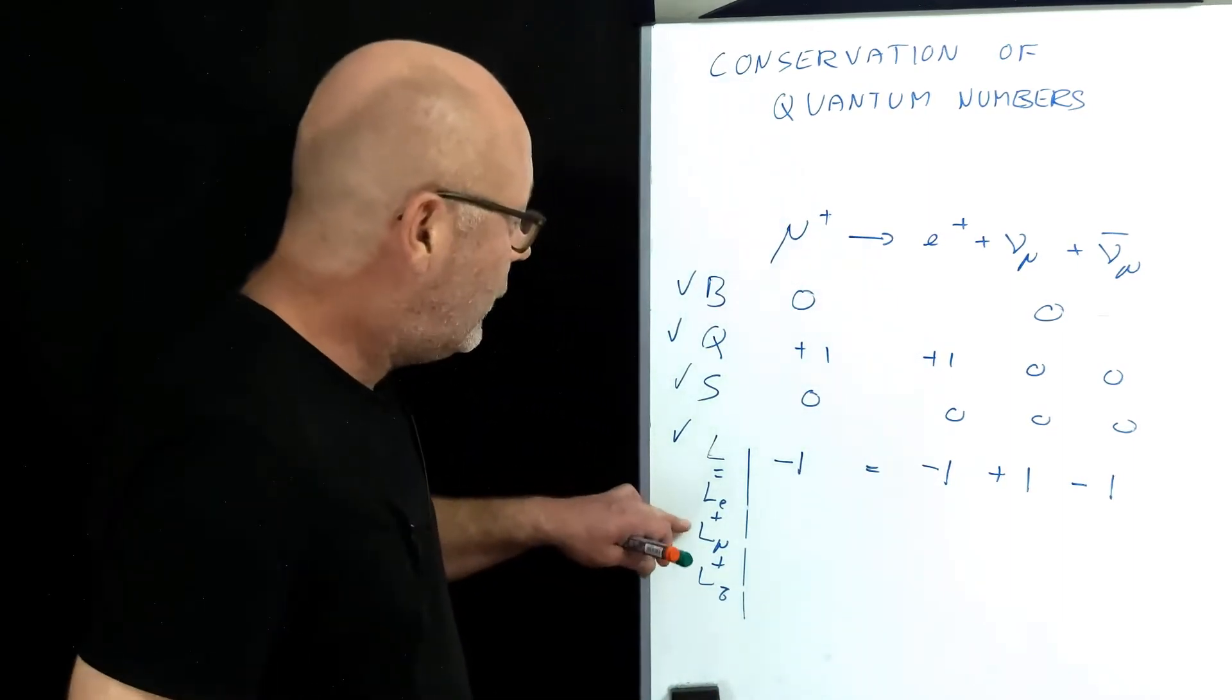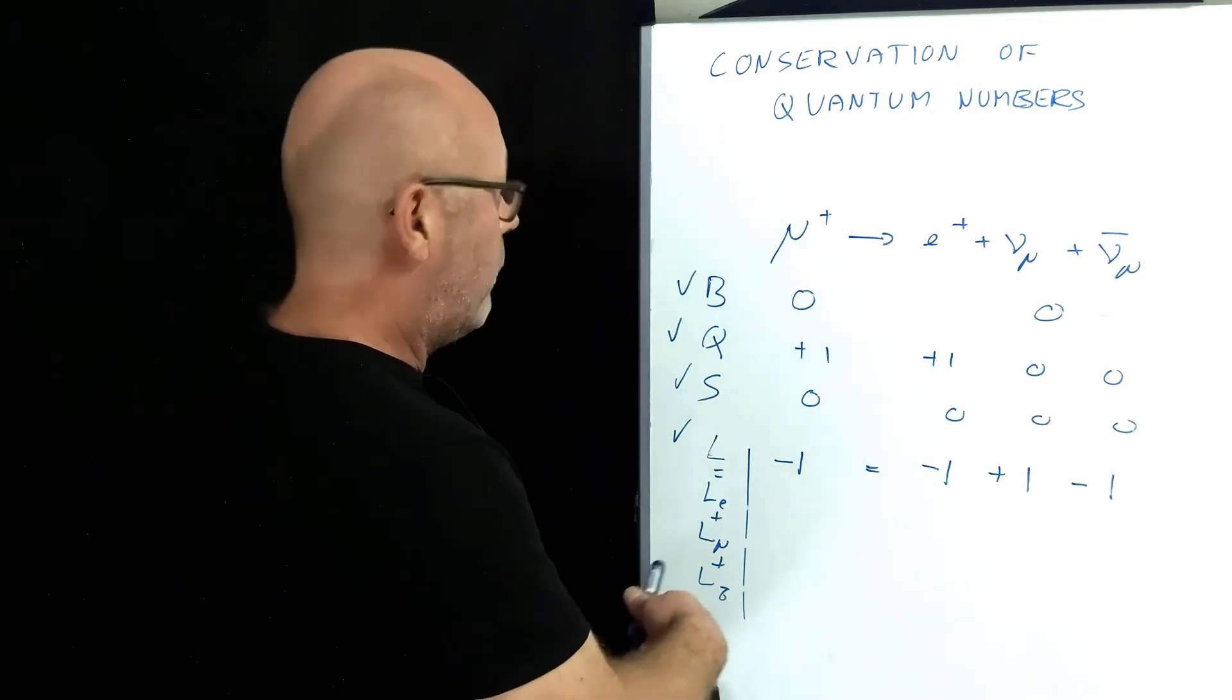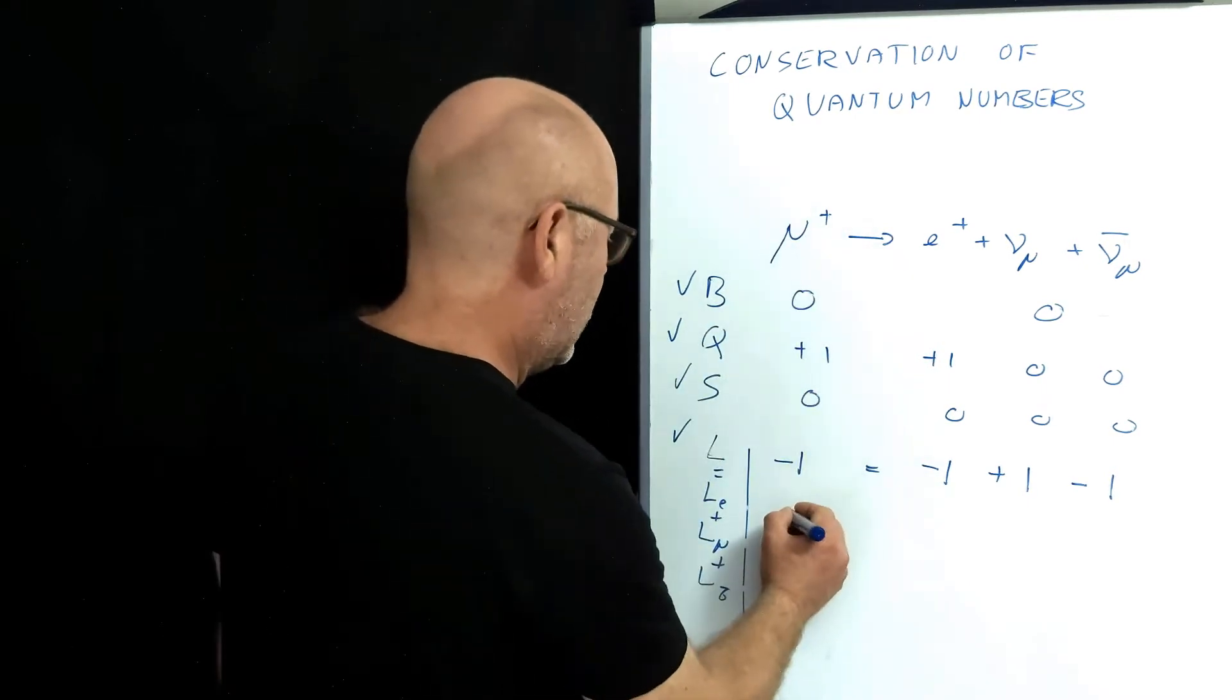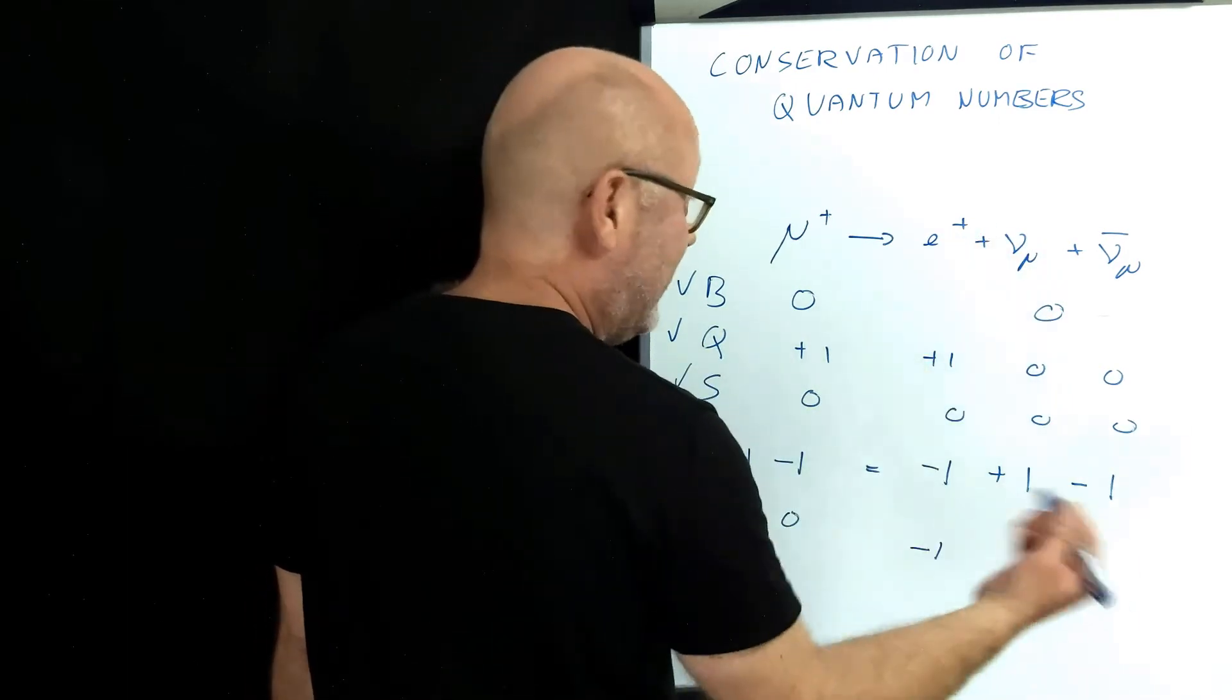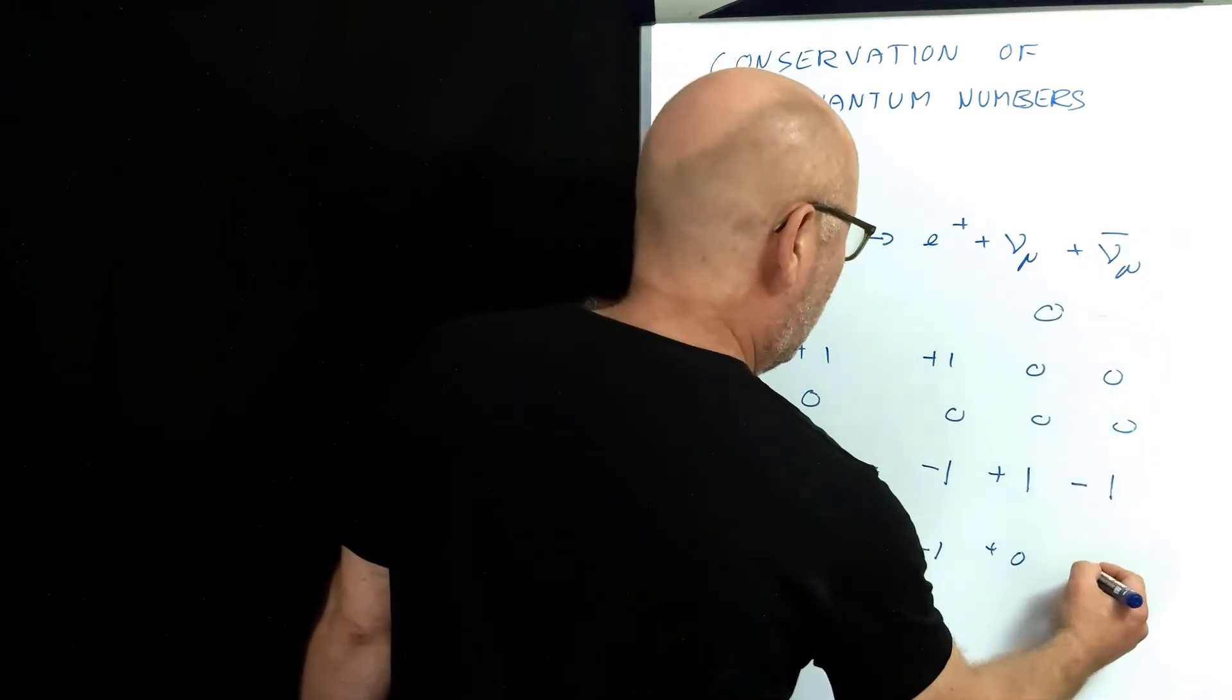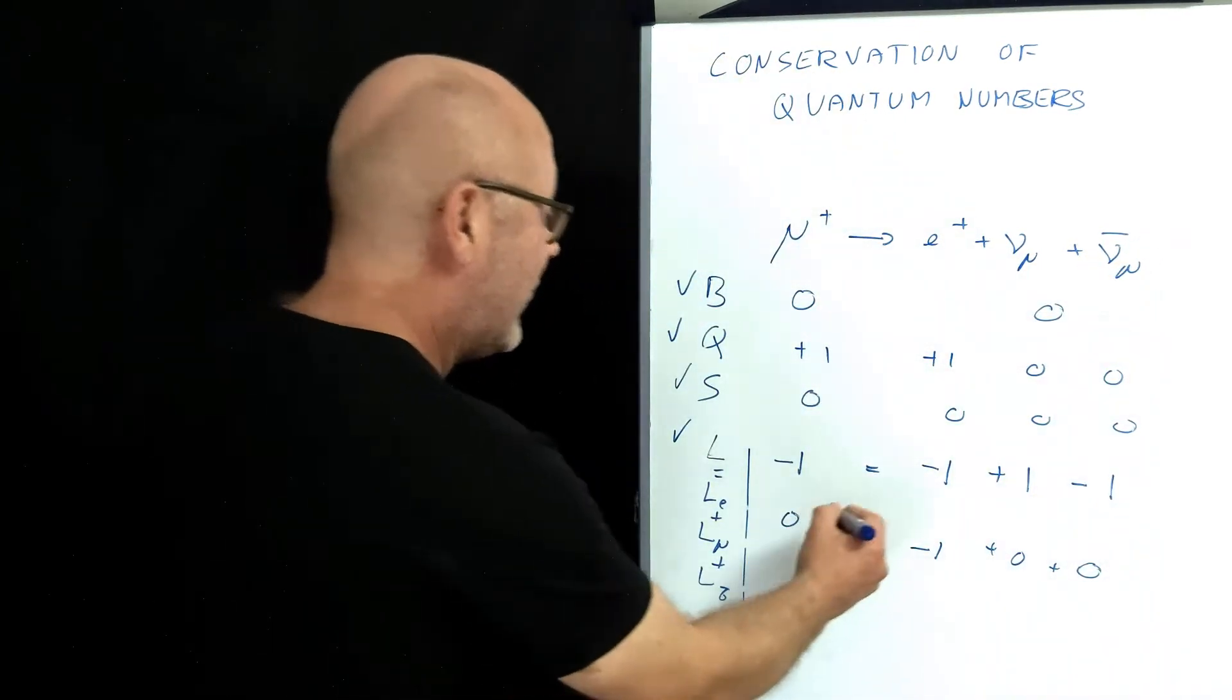So, for example, let's consider the electronic lepton number. This is not an electron, so zero. This is a positron, so minus one. This, the muonic neutrino, is not electronic, so it's zero. And this would be zero, too. Nothing to do with the electron. So you see, that's not conserved.